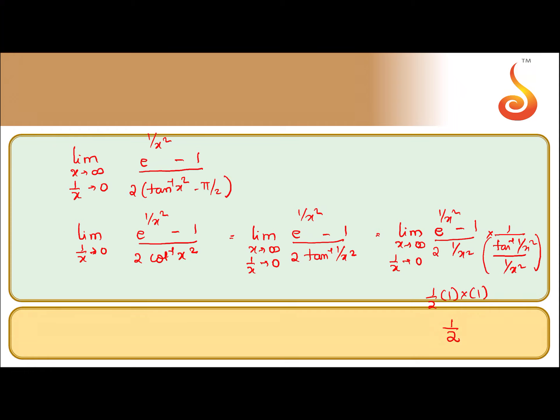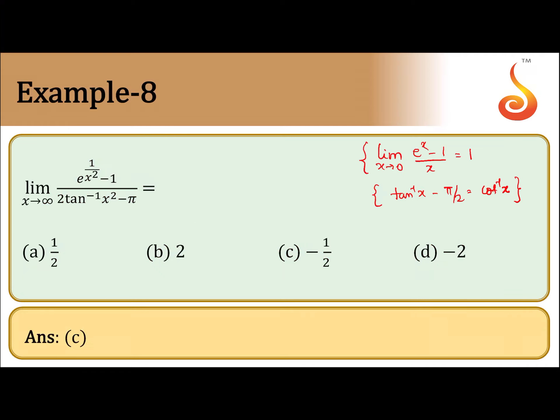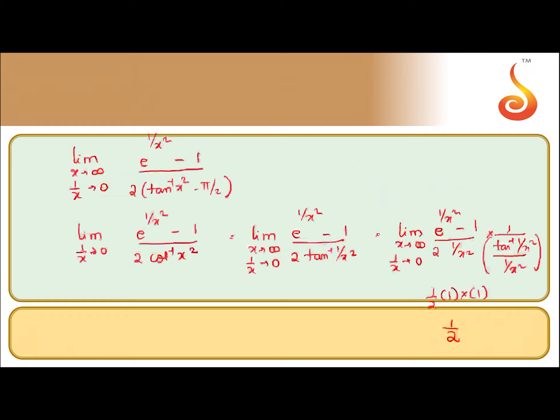So finally we get 1/2 × 1 × 1. But wait — we used the concept that tan inverse x² minus pi by 2 equals negative cot inverse x². Cot inverse x² is tan inverse (1/x²). So the minus sign will come here — sorry for the interruption. The minus sign will come here.